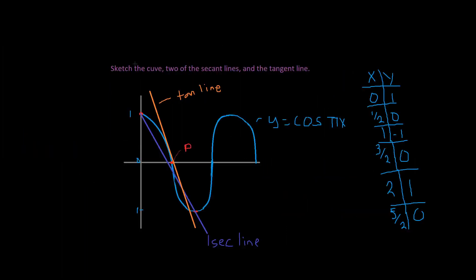All we have to do now is sketch the curve of the two secant lines and the tangent line. We sketch this using the function y equals cosine pi x given at the beginning. Plug in x equals 0: y equals one. x equals one half gives zero — that's point P. x equals one gives negative one. x equals three halves gives zero. x equals two gives one, and so on.